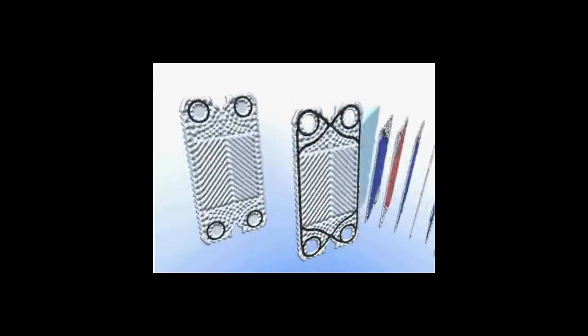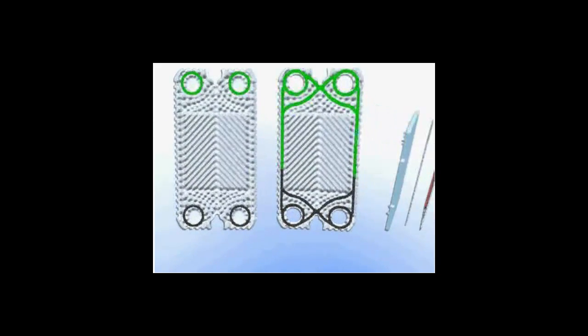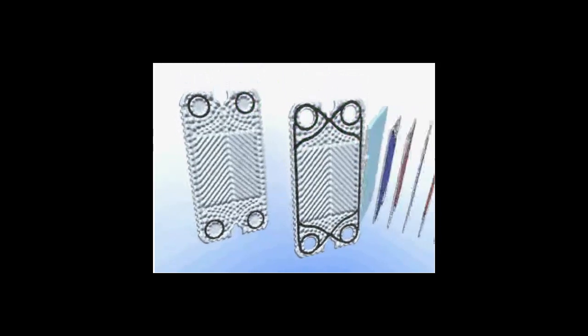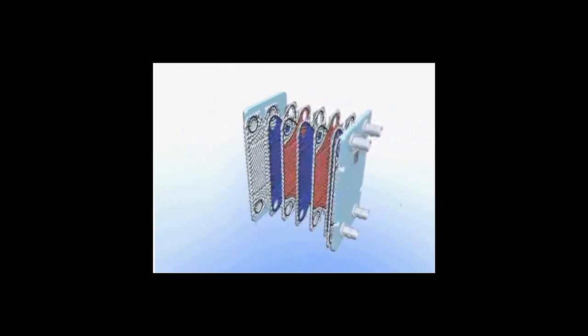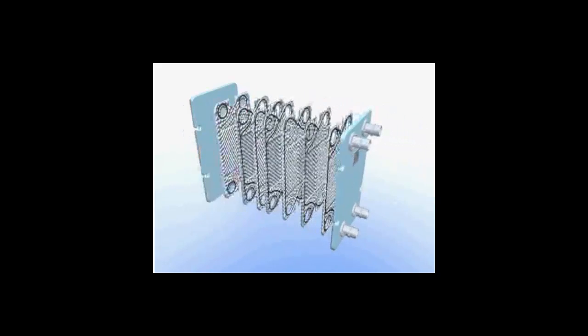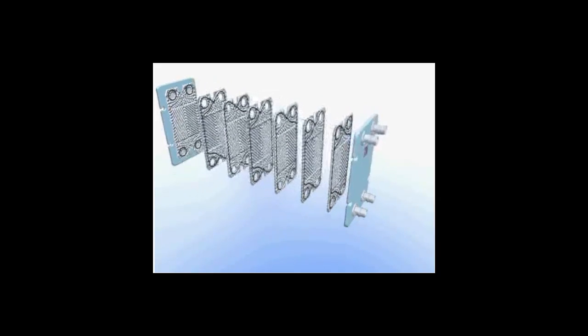Special plates called end or transition plates with unique gaskets and blocked ports direct overall product and utility flow in a pass. These plates are used at the end of a pass or next to the frame. Looking at flow in this one-pass configuration.